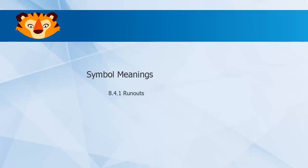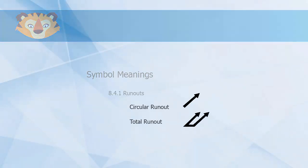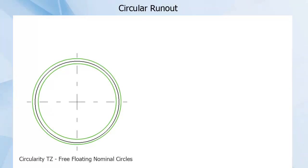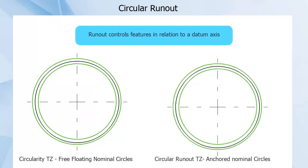We will first look at the two runout controls, runout or circular runout and total runout. This is different from circularity in that runout also controls in relation to a datum axis. So a surface that is incredibly round but is off-center from the referenced axis will not meet the callout.